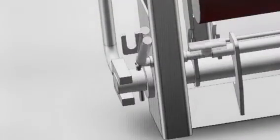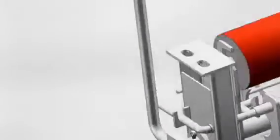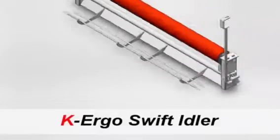The Ergo Swift idler is ideal for conveyors which only have maintenance access from one side and are available to suit a range of belt widths.